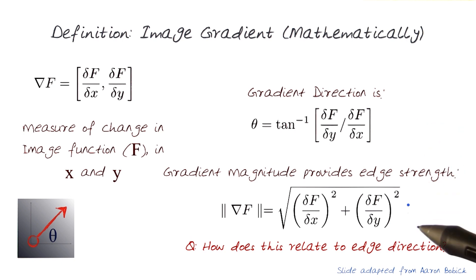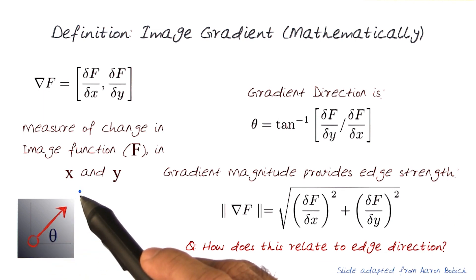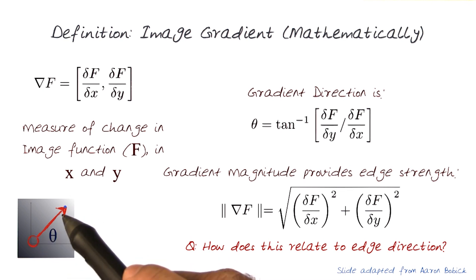So while we're at it, one thing I want everybody to think about is how does this relate to edge direction? When I have a point here and I have the gradient direction here with theta and the magnitude, where is the edge? Hopefully, you'll have that answer in a bit.